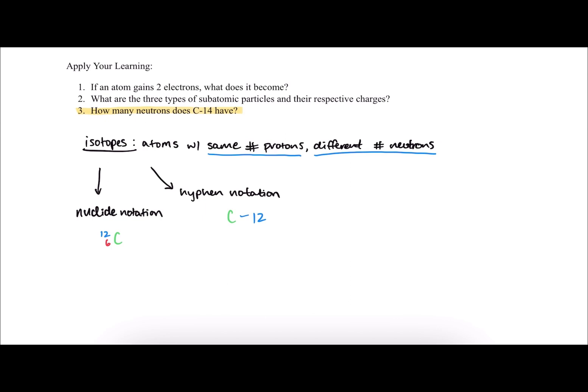The mass number, which is in blue for each notation, represents the total number of protons plus the total number of neutrons. It's the sum of protons and neutrons.